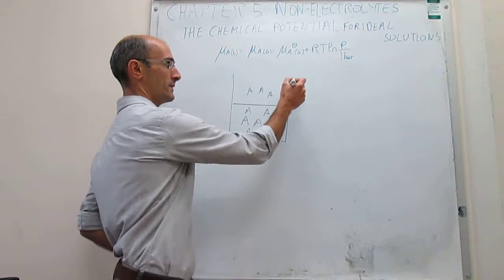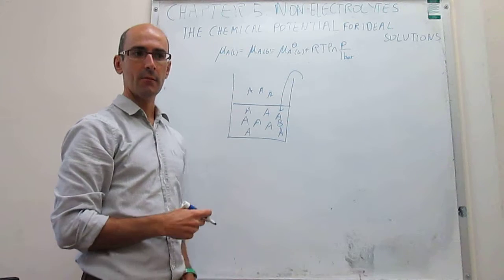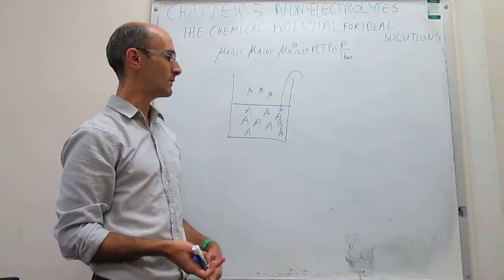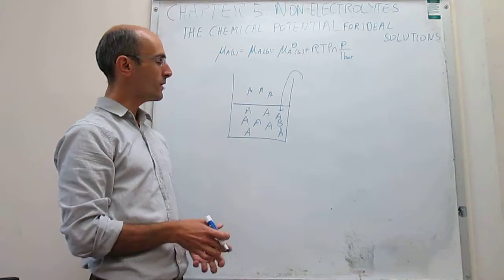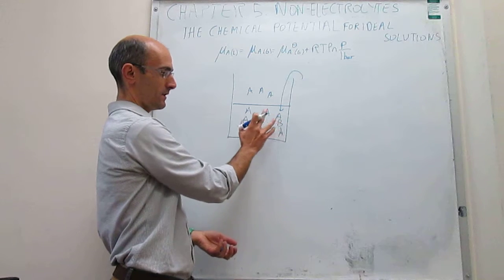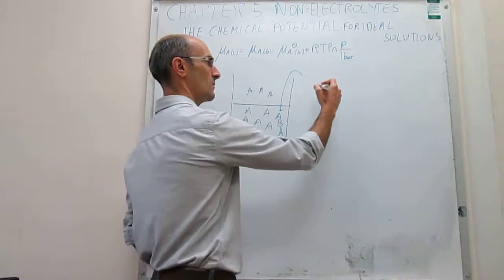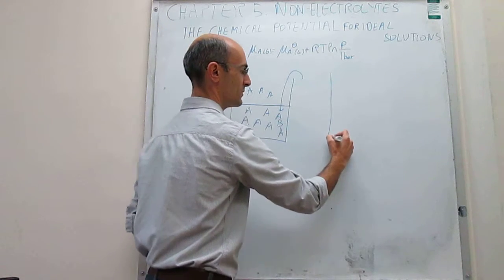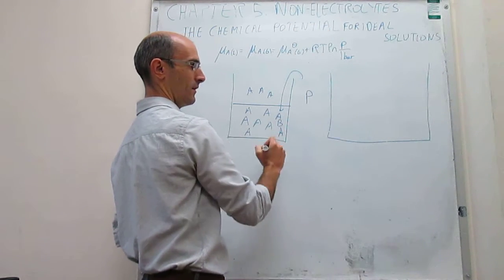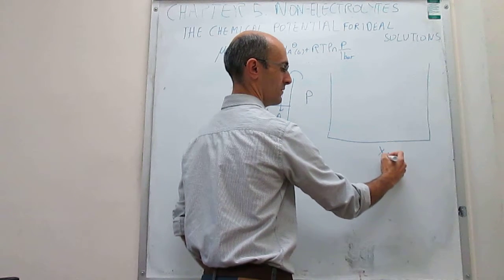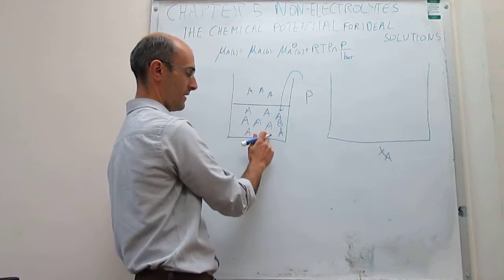Raoult then added another component B — this could be a different substance. For example, if A was water, you can add ethanol; if it's benzene, you can add toluene. The question is: how does the presence of B in the solution affect the vapor pressure of A on top of the solution? Raoult described the results using graphs where he measured the vapor pressure on top of the solution as a function of the mole fraction of A in the solution — a measure of concentration of A in the solution phase.